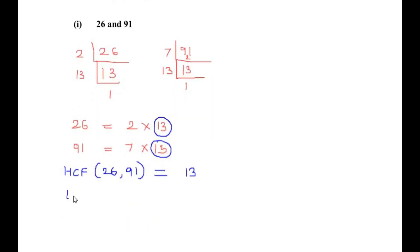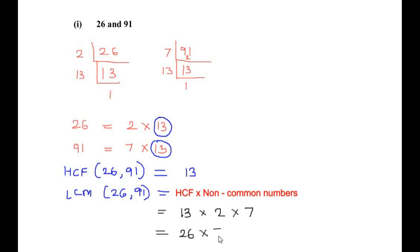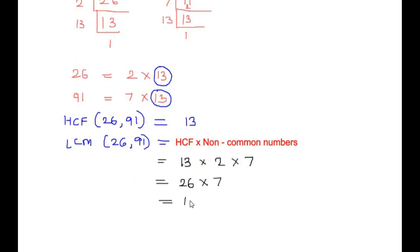Now to find the LCM of 26 and 91, remember the LCM is found as HCF times the non-common numbers. The HCF is 13, and the non-common numbers — the ones we have not circled — are 2 and 7. So the LCM is 13 times 2 times 7, which gives us 182.